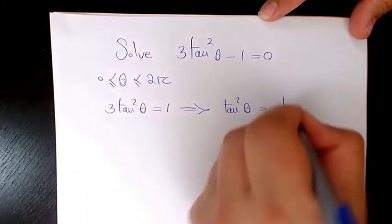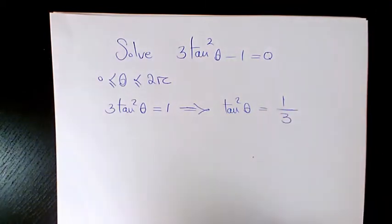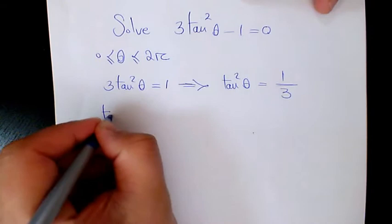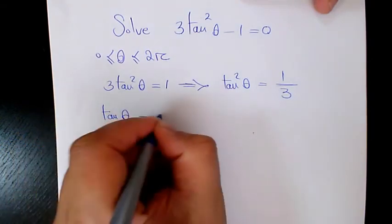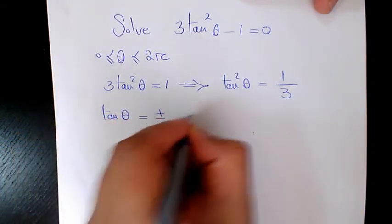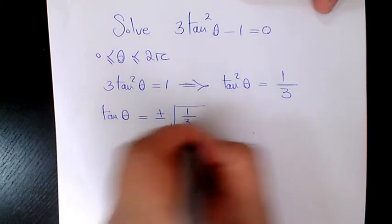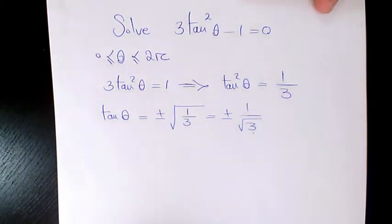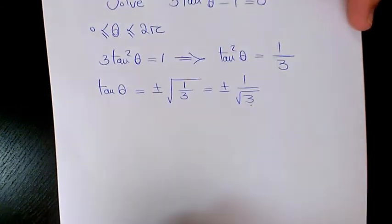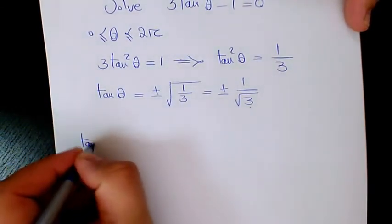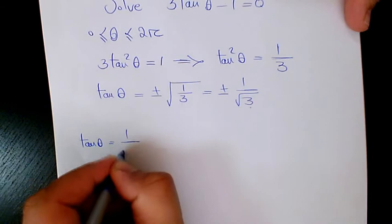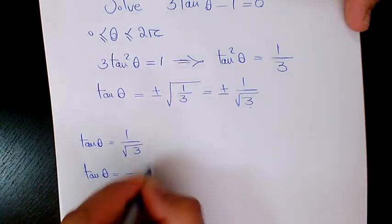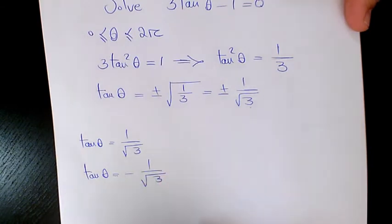Basically we divide both sides by 3. Then tan theta is going to be plus or minus the square root of 1 over 3, or plus or minus 1 over root 3. Now we have two parts: one part is 1 over root 3, the other one is going to be negative 1 over root 3.